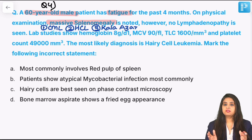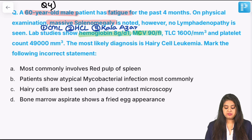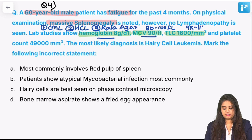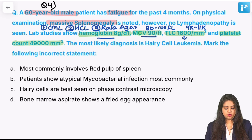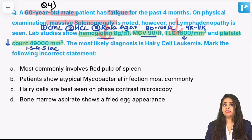Lab studies: hemoglobin is 8 — anemia is present. MCV is 90 femtolitres (normal 80–100), so this is normocytic anemia. TLC is 1600 (normal 4000–11000) — TLC is decreased. Platelet count is only 49,000 (normal 1.5–4.5 lakhs) — platelet count is also low. The bone marrow is being affected: RBC, TLC, and platelets have all gone down.